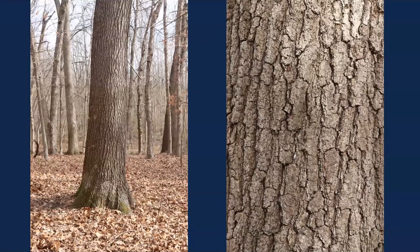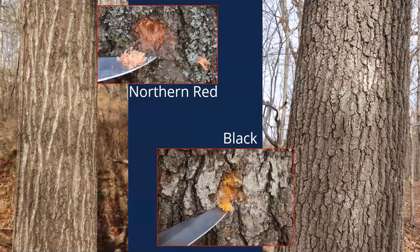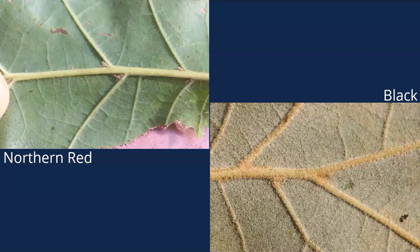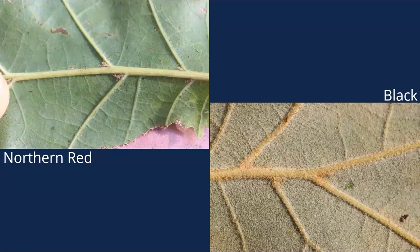So on the left you've got northern red with shiny ski trails and light pink inner bark. On the right you've got black oak with heavier, darker bark and bright orange inner bark. Take a leaf and flip it over — on the left is northern red, with hair only in those vein axils, everywhere else smooth. Black oak is going to have orange fuzz covering the entire underside of the leaf often. Good ways to tell them apart.